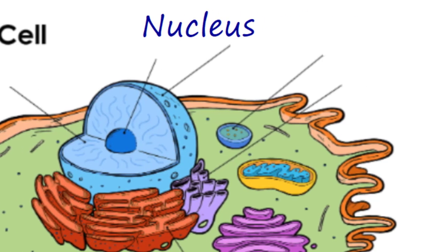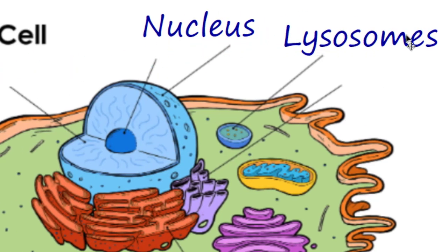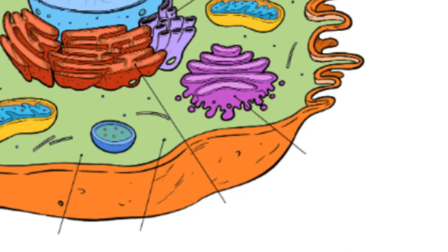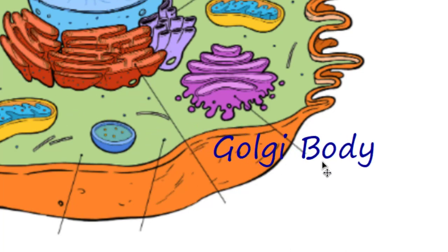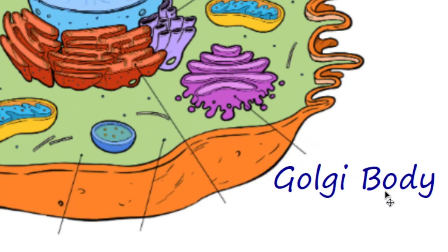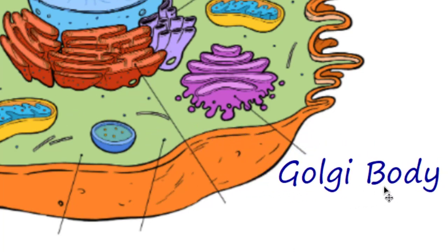We have the lysosomes, which are kind of the clean-up crew — they clean up all the nasty stuff of the cell. We have the Golgi body, this funky looking purple thing right here. The Golgi body packages proteins, and it's kind of the mail center of the cell.